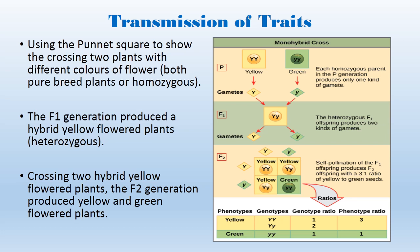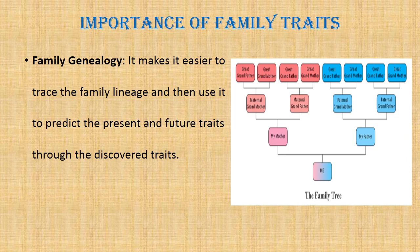This explains how transmission of traits occurs in living organisms. Now, why is the knowledge of family traits important? One importance of knowing family traits is family genealogy. Family genealogy makes it easier to trace the family lineage and predict present and future traits. The family tree can show how traits are transmitted from parents to offspring across generations. You are who you are because of the traits that have been passed along from great-grandparents to grandparents, to parents, and from there to you as an individual.